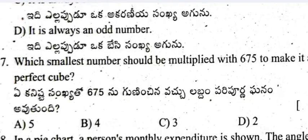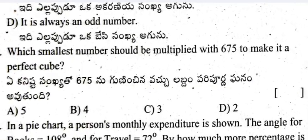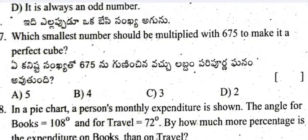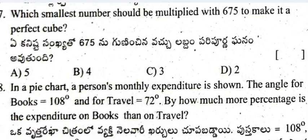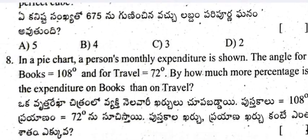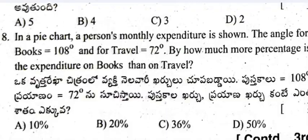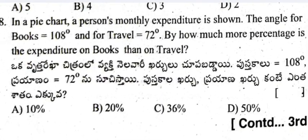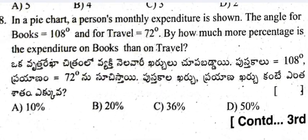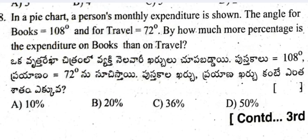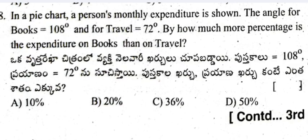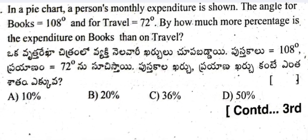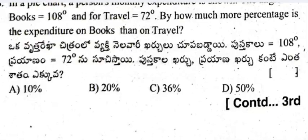Question 7: What is the smallest number that should be multiplied with 675 to make it a perfect cube? Options are 5, 4, 3, 2. Question 8: In a pie chart, a person's monthly expenditure is shown — the angle for books is 180 degrees and for travel is 72 degrees. By how much more percentage is the expenditure on books than on travel?